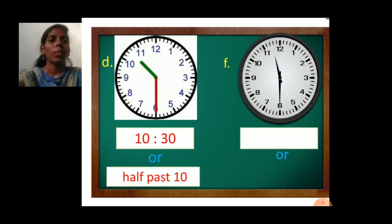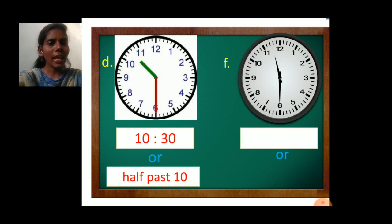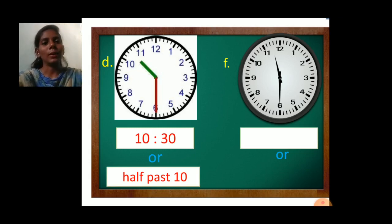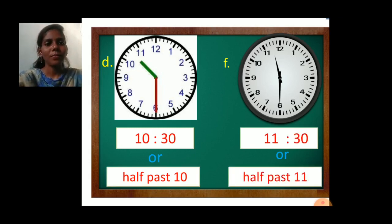Next, F. Here the minute hand is at number 6 and the hour hand has crossed number 11. So it is 11:30, or half past 11.